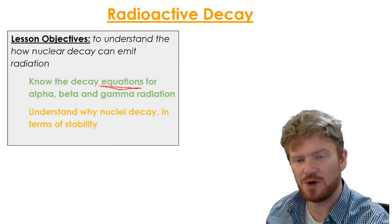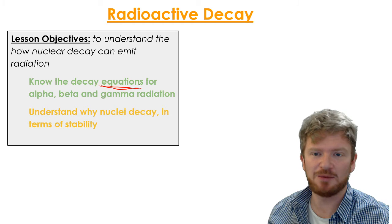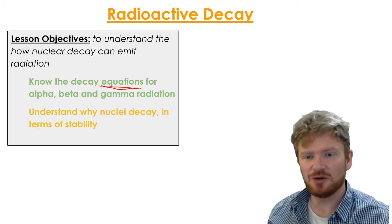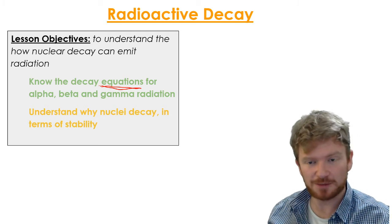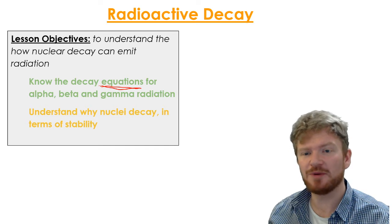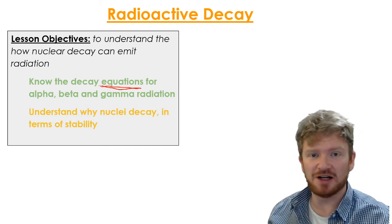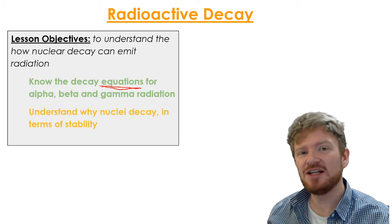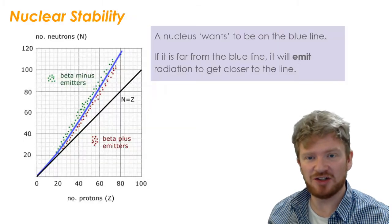And there are going to be some equations that you are going to have to learn. These are a weird kind of hybrid of a physics equation and a chemistry equation. And it's going to show you how alpha, beta and gamma radiation work. And we're going to look a little bit at why nuclei actually decay. But you don't really need that for IGCSE.